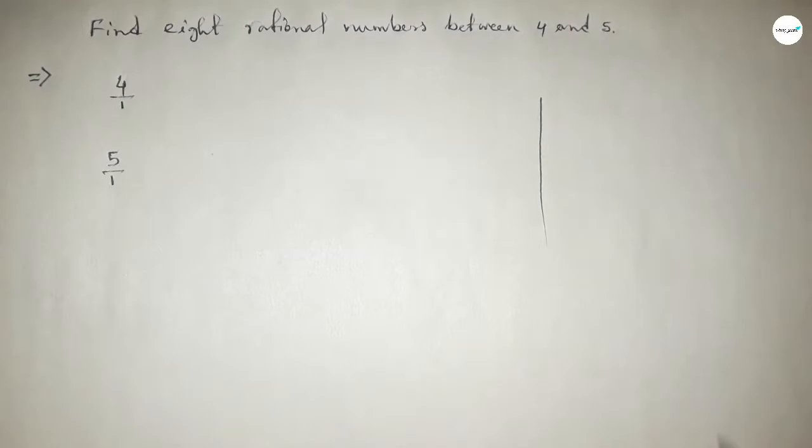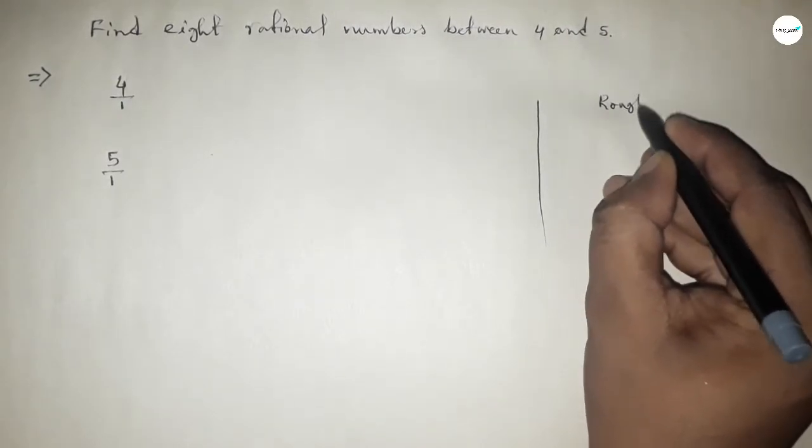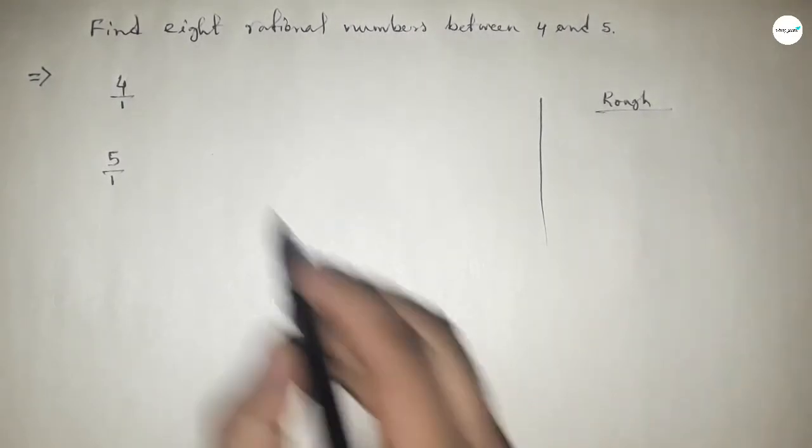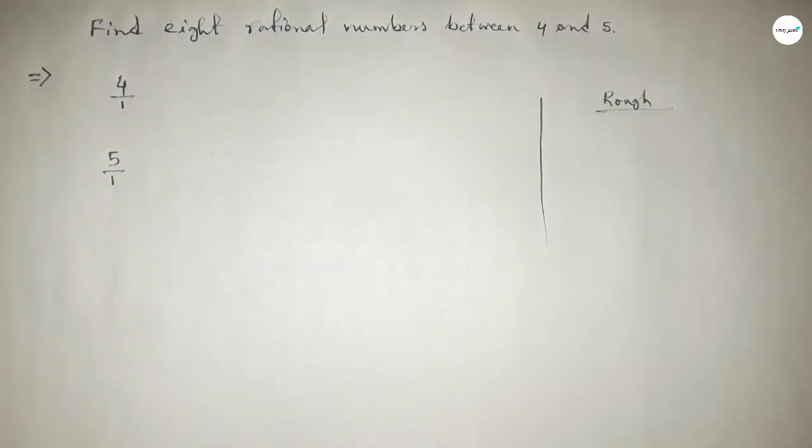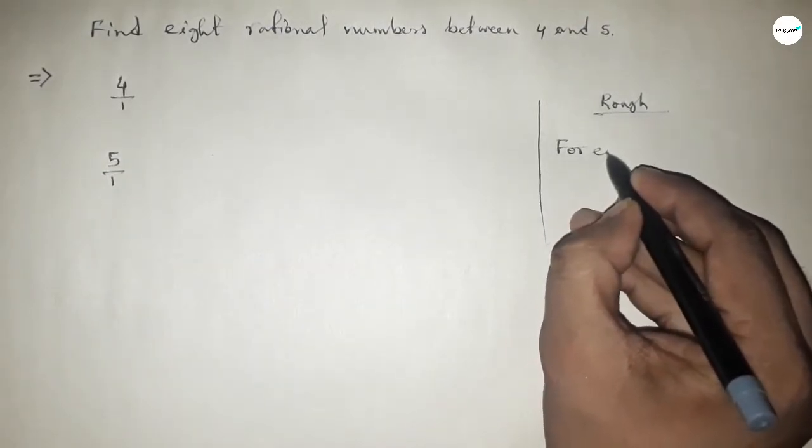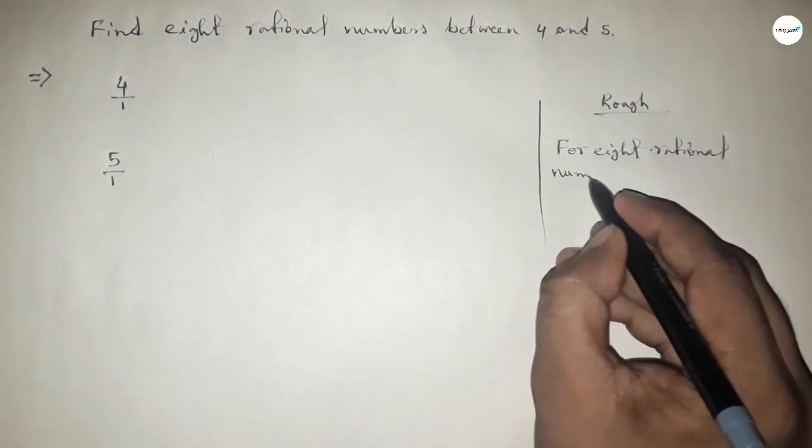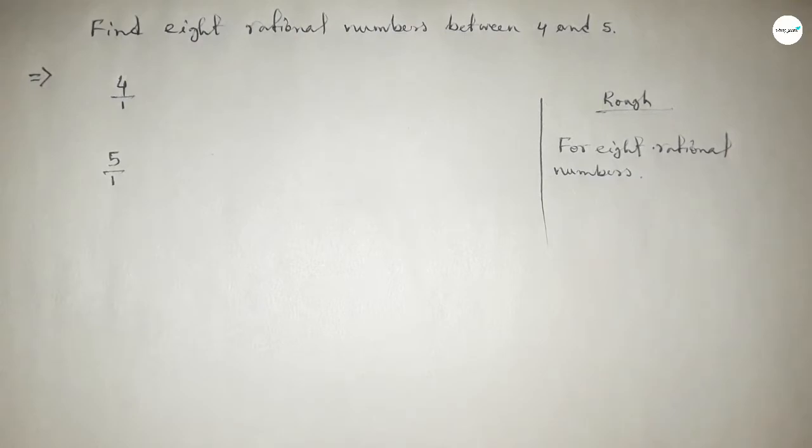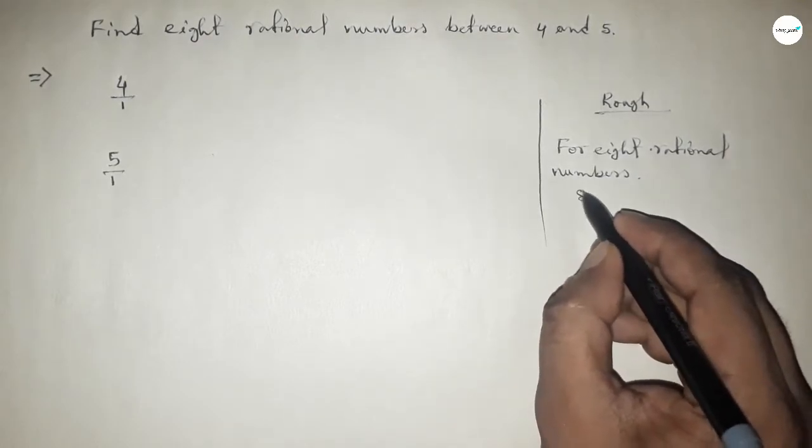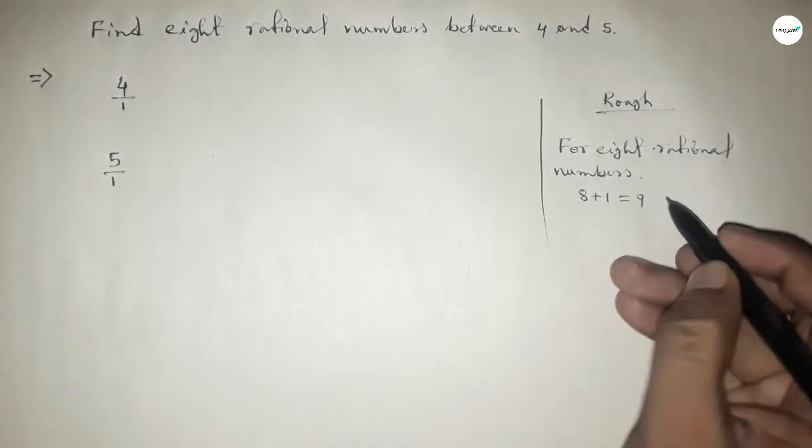Now roughly discussing some calculation here, the denominators of both are equal. So for eight rational numbers between any two numbers we have to follow this method: we should multiply by 8 plus 1 equal to 9 with both numbers up and down.